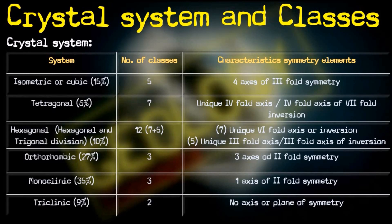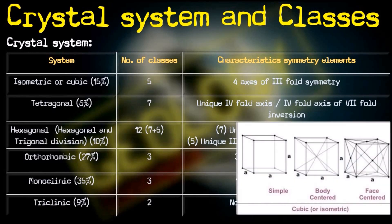The first system is the isometric system. In this system, all three crystallographic axes are of equal length and the angle between them is 90 degrees. They are orthogonal to each other and hence they are interchangeable.